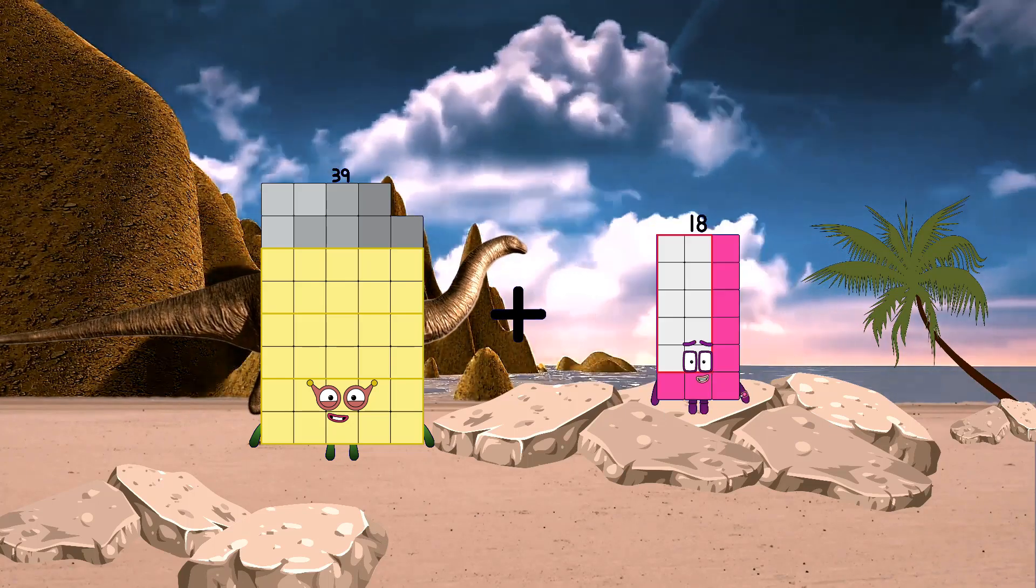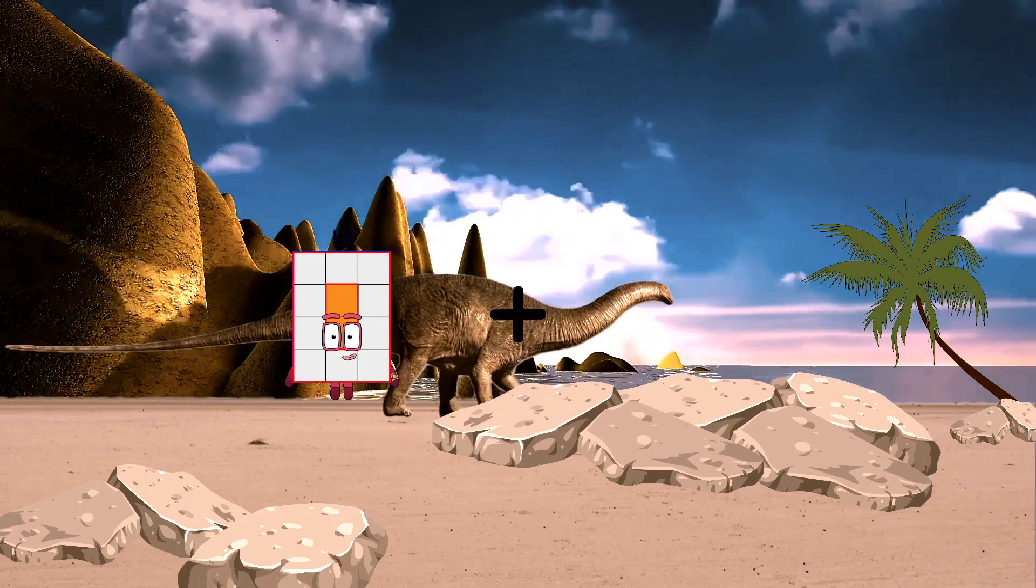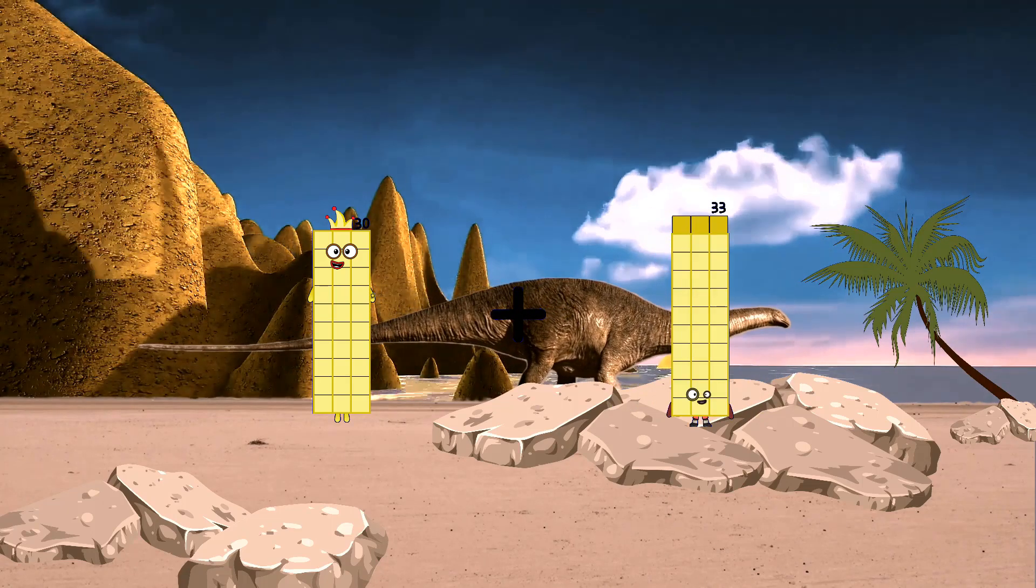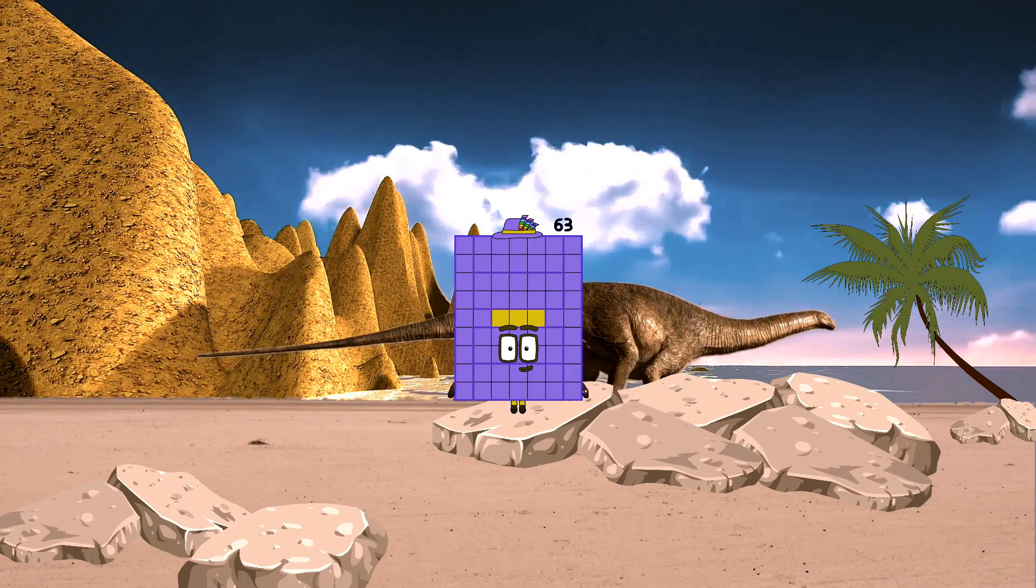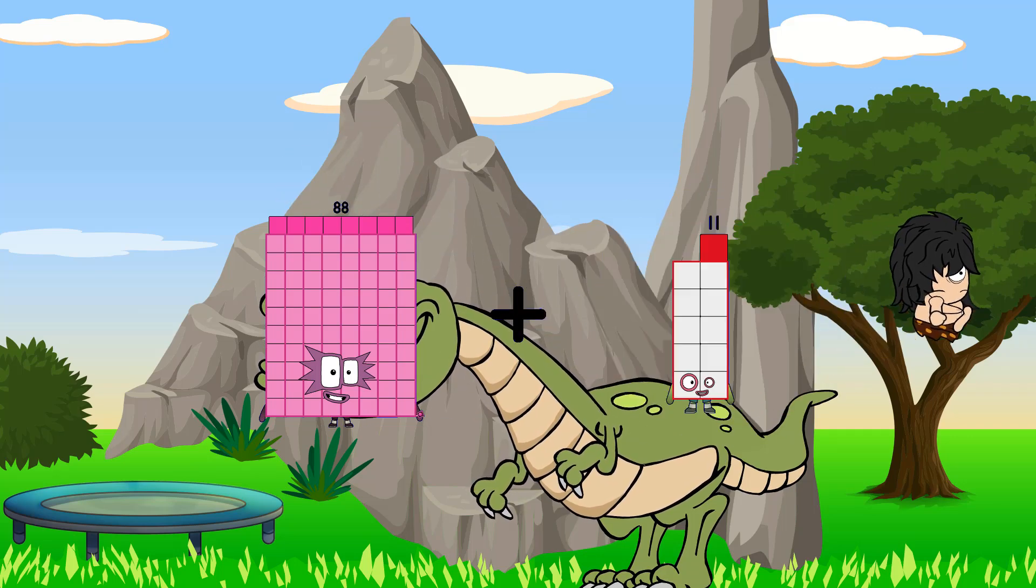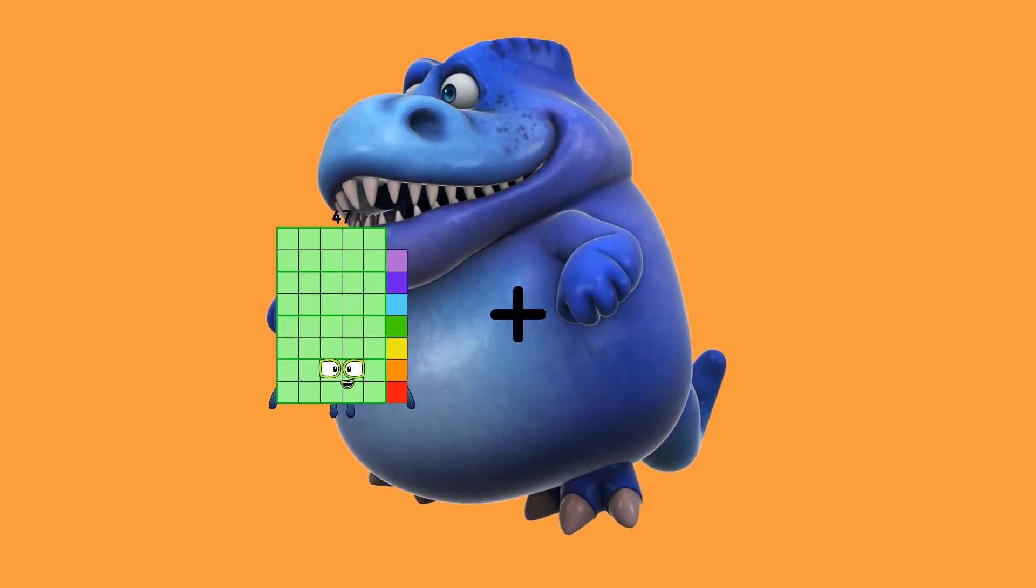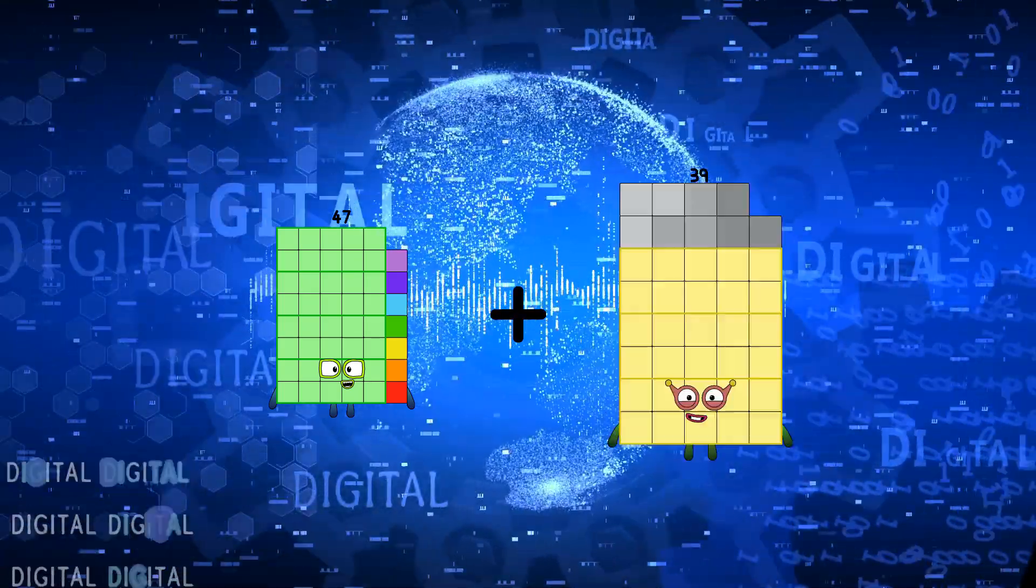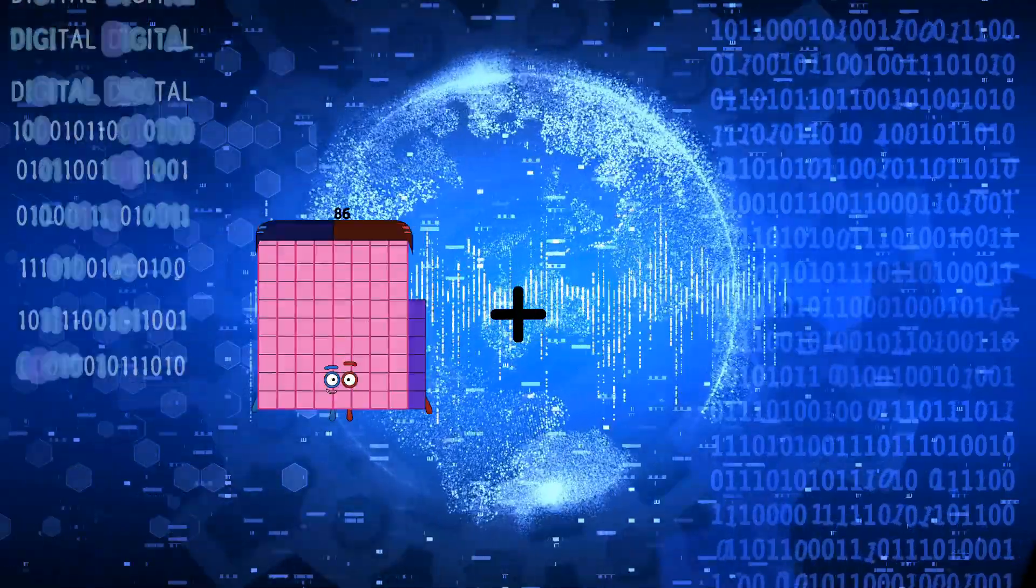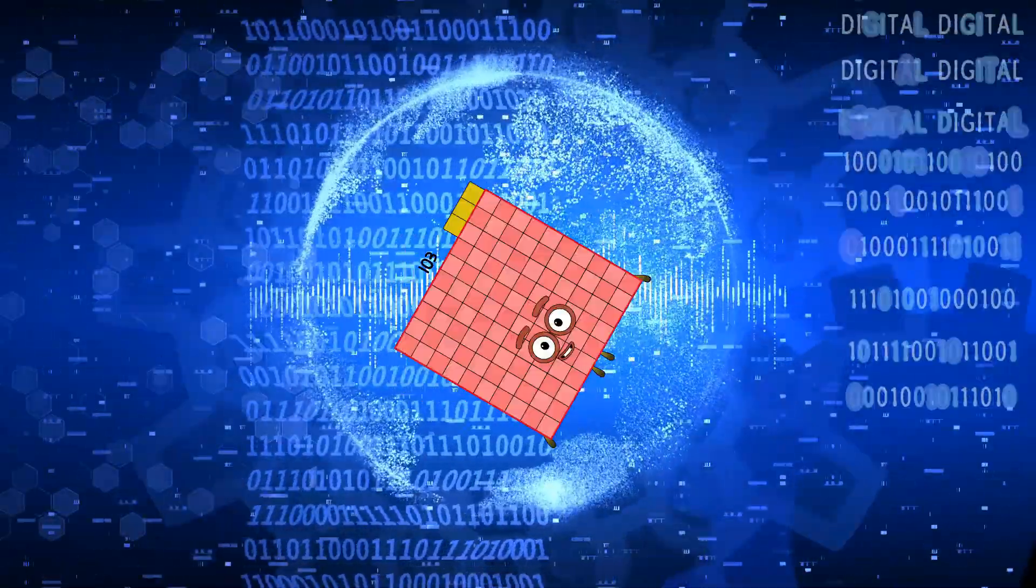39 plus 85 equals 124. 30 plus 33 equals 63. 88 plus 1 equals 89. 89 plus 32 equals 121. 89 plus 14 equals 103. 25 plus 76 equals 101.